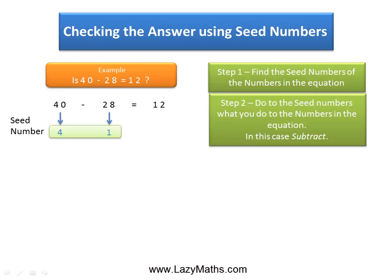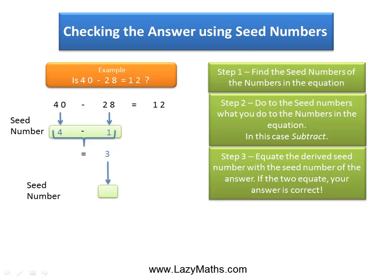The next step is to subtract the seed numbers because the original numbers were also subtracted. So 40 minus 28 and hence 4 minus 1. 4 minus 1 is equal to 3 and the seed number for 3 is 3.